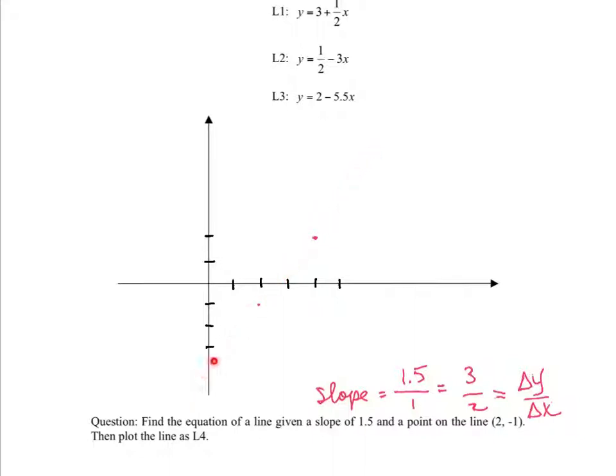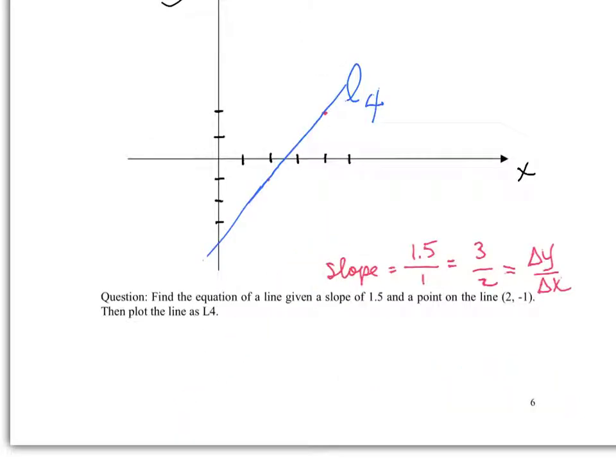In fact, we could guess what the y-intercept would be to create the equation of a line, because we already have a slope. But let's calculate it. From the graph, it looks like it should intercept at -4. So let's see what happens. Call this line L4.